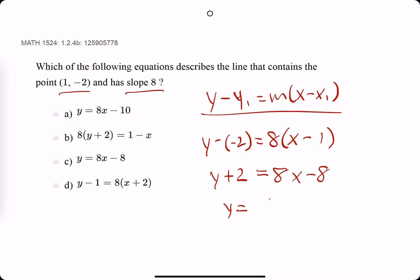We subtract the 2. We get 8x minus 8 minus 2 is minus 10. Y equals 8x minus 10. Bring out our eraser and that is our answer.